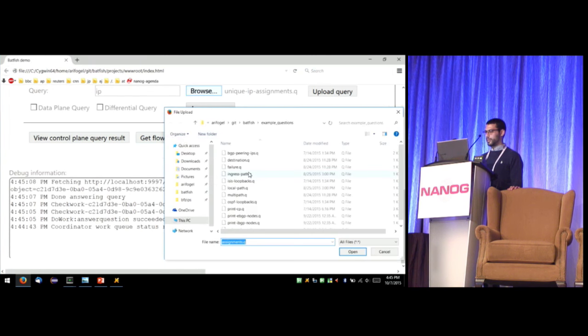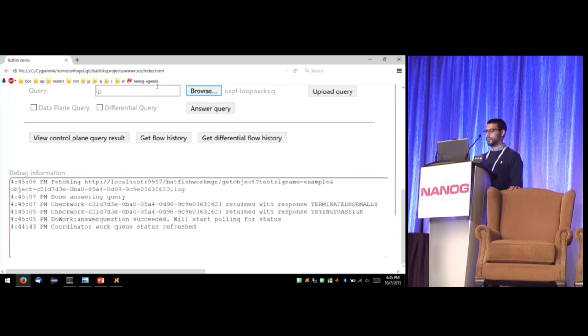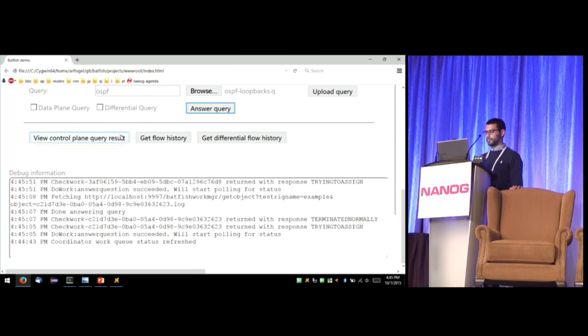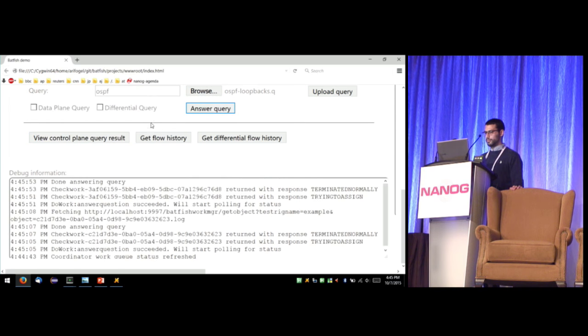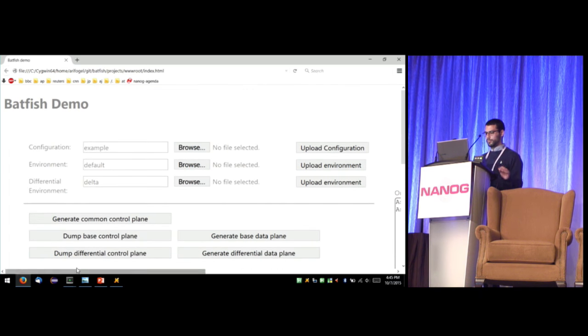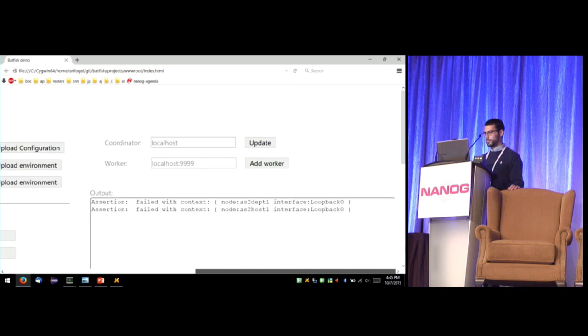You may also want to check to see whether OSPF contains all of the loopback networks. So let's check for that. So it detected two violations here. The internal autonomous system at the top, AS2 dept 1 and AS2 host 1, are not actually exporting loopback 0 into OSPF. So those violations were detected.